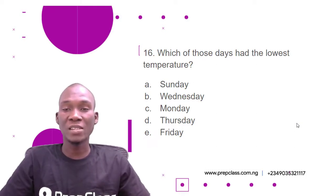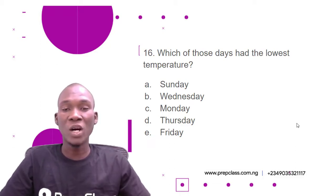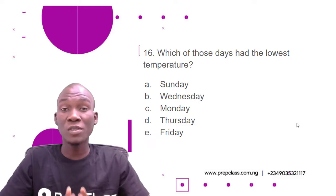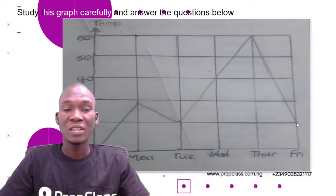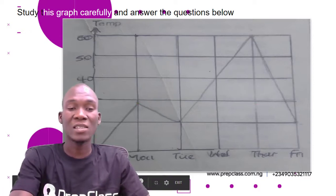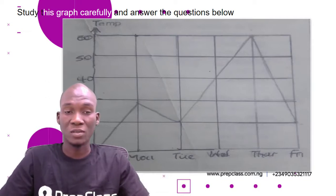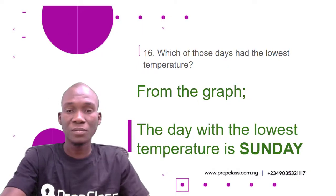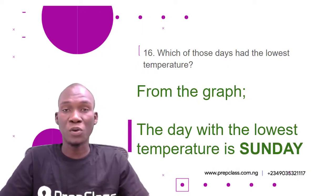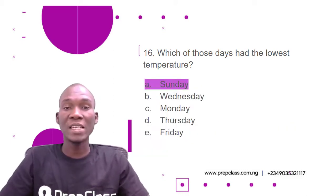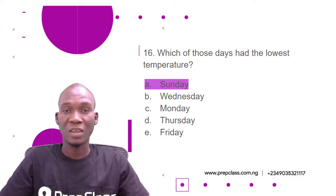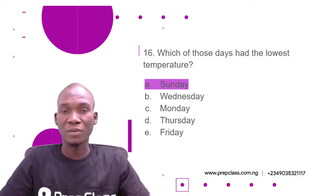Question number 16: Which of those days had the lowest temperature? Options: A) Sunday, B) Wednesday, C) Monday, D) Thursday, E) Friday. Looking at the graph, the lowest temperature is 10, and that belongs to Sunday. So from the graph, the day with the lowest temperature is Sunday. The correct option is A, Sunday.